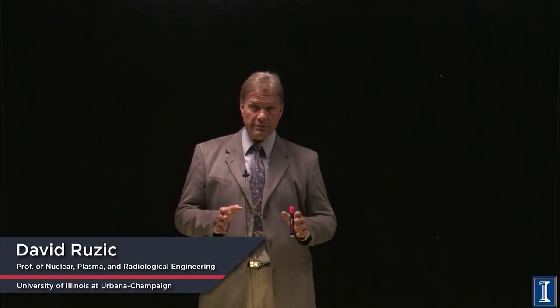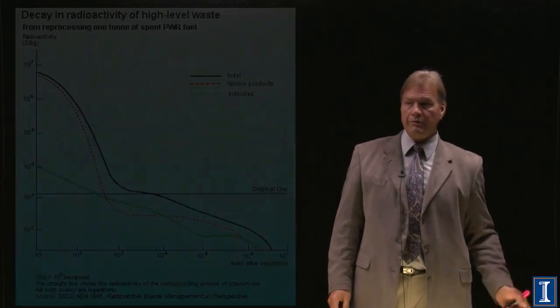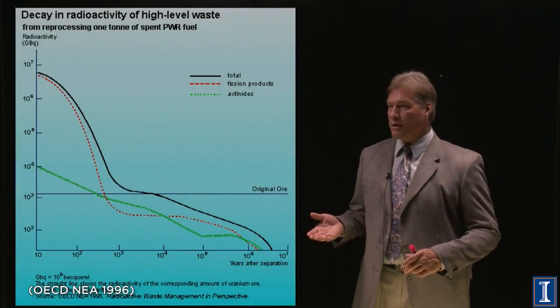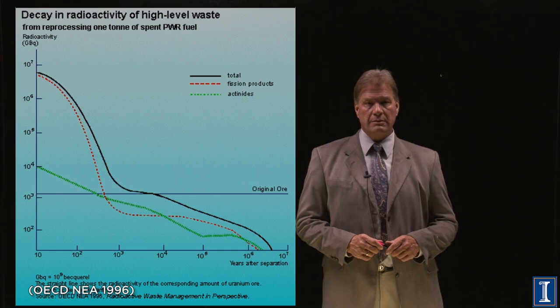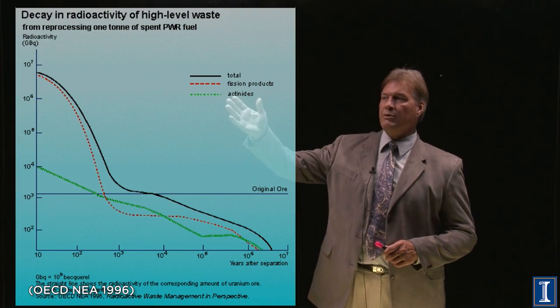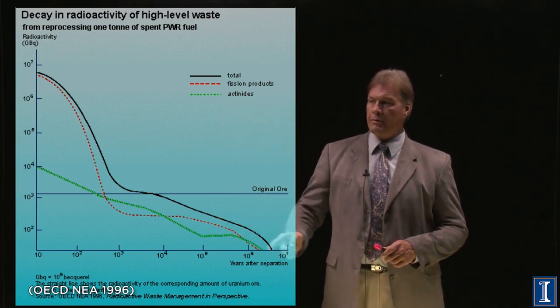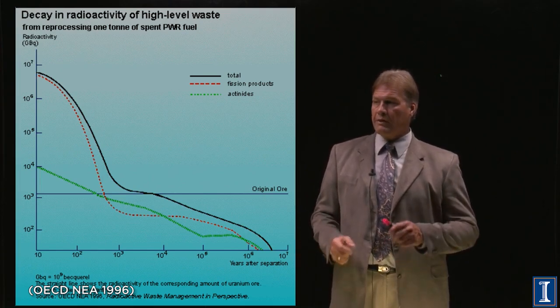If you have breeder reactors you need to reprocess, but there are actually reasons to reprocess even without a breeder reactor. When you have fission you have two types of high level waste products: you have the fission products, shown on this graph as the red dotted line. This is a graph of how dangerous they are — the radiotoxicity versus time — and it's log time, so there's a lot of time represented here.